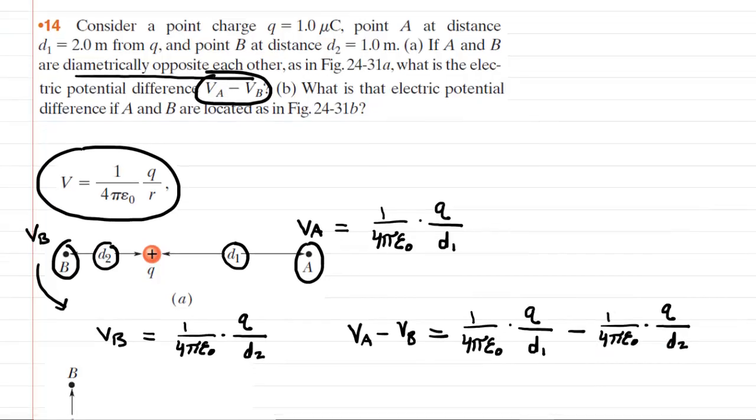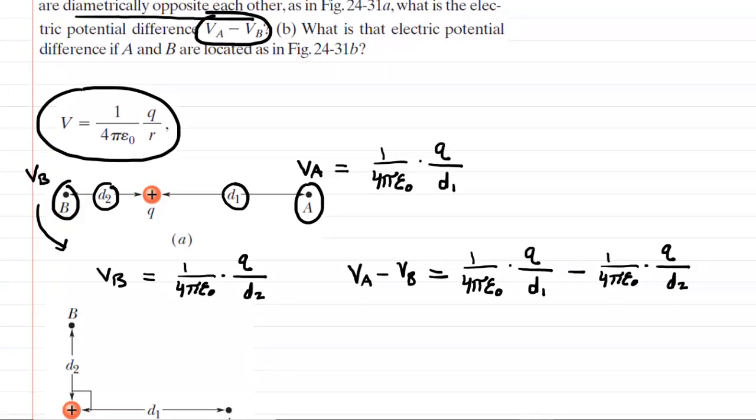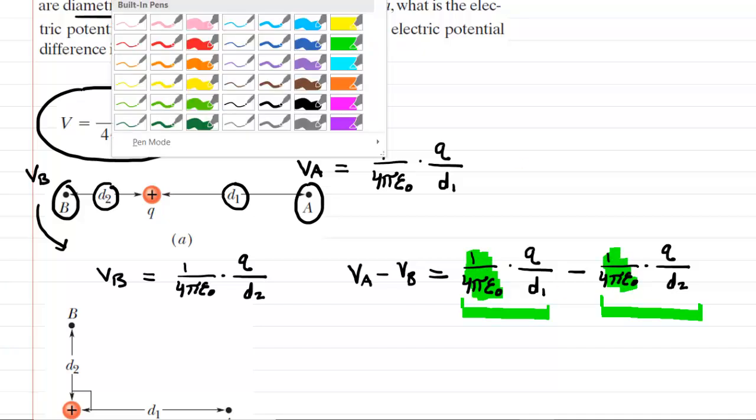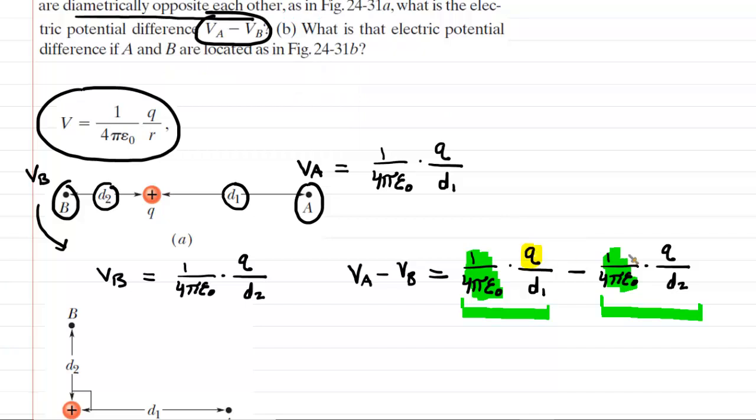We could substitute in the values to get the answer right now, but it might be more helpful to do a little factoring here, make the calculation a little bit simpler. If you look carefully, you've got two terms, this term right here and this term right here, and what they have in common is this factor of 1 over 4 pi epsilon naught, and they also have in common the charge Q.